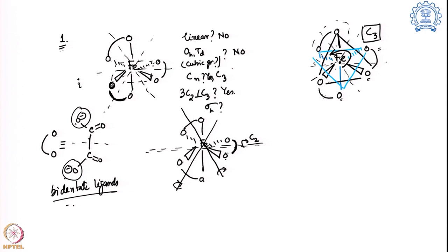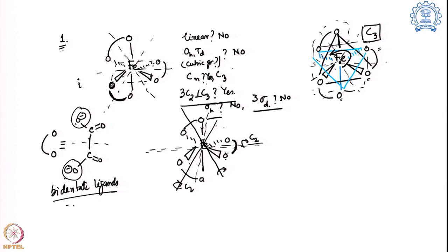Is there a sigma H? The sigma H plane would be perpendicular to C3, but the front and back portions do not exchange, so there is no sigma H. Do we have 3 sigma D planes? The sigma D planes would lie between the C2 axes, but placing a sigma plane there does not work because oxygen comes out on the other side with nothing to match. So there is no sigma D either. With no sigma H and no sigma D but three C2 axes perpendicular to C3, this molecule belongs to point group D3.